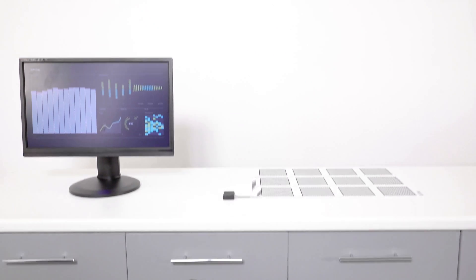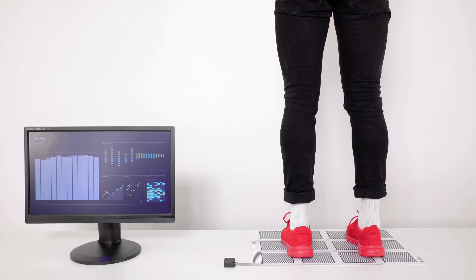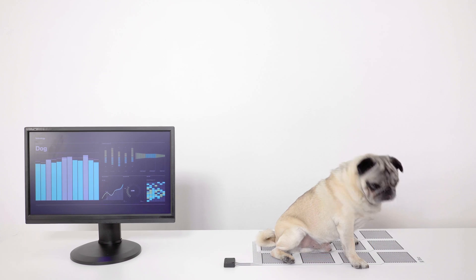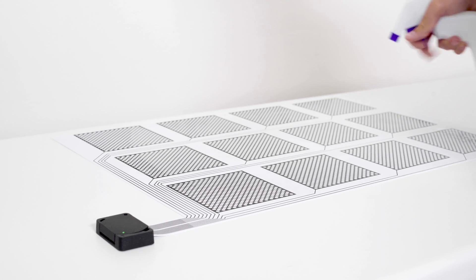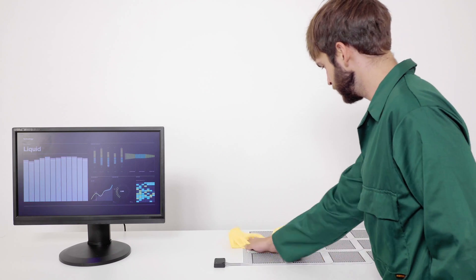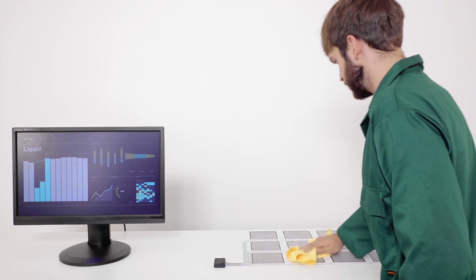So how does one technology serve so many use cases? The secret is the way we process information from the surface. Everything we measure has a different signal. We create and measure a precise electric field around the surface, interpreting data and instantly adapting system settings. We call this technology dynamically functional surfaces.